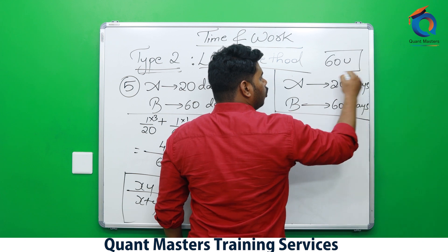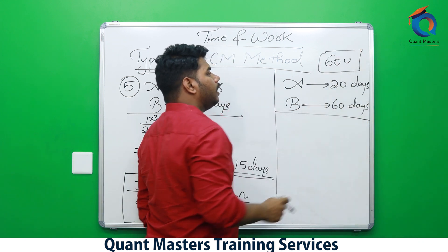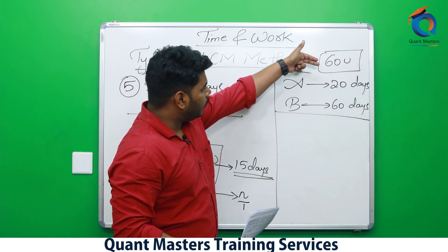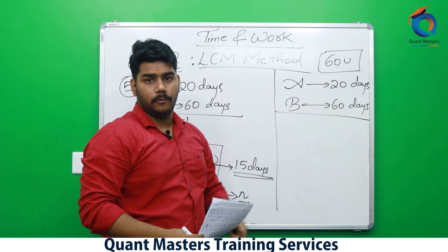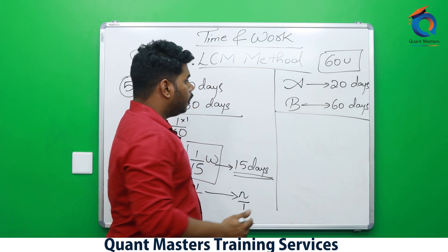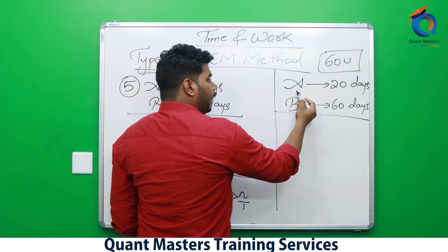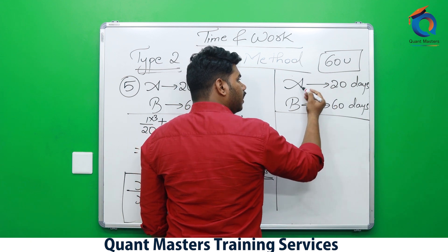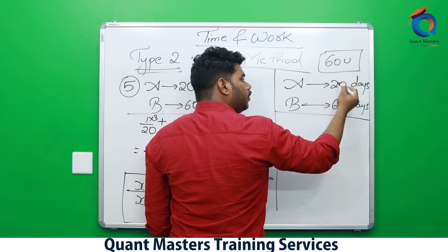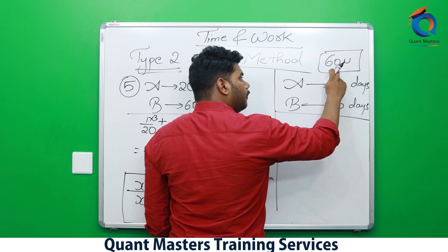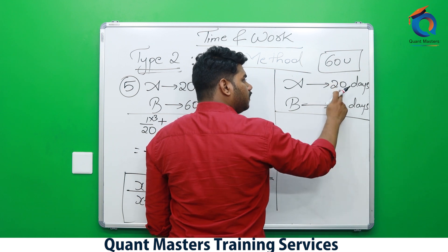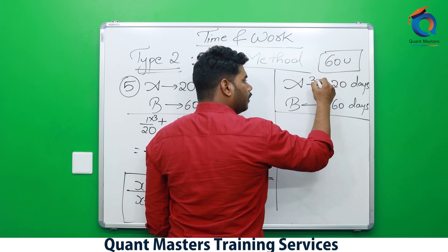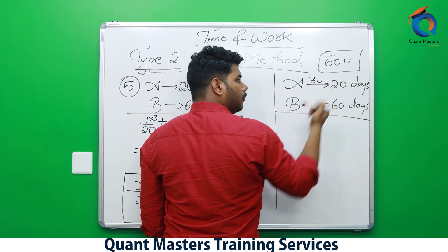A completes the work in 20 days, B in 60 days. Directly take the LCM of 20 and 60, which is 60. So assume total work is 60 units. A completes 60 units in 20 days, meaning in one day he does 60/20 = 3 units.